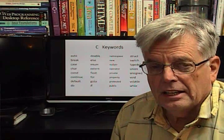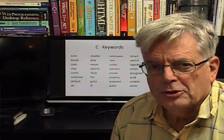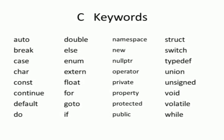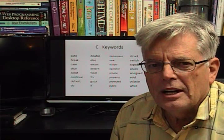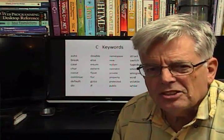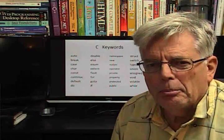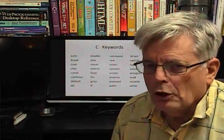The next slide gives examples of keywords for the C language, and then the next slide after that gives samples of keywords that are added with the C++ language. Don't worry about memorizing all these keywords since you have a context-sensitive editor — if it shows up in blue, then you know it's a reserved word or a keyword.